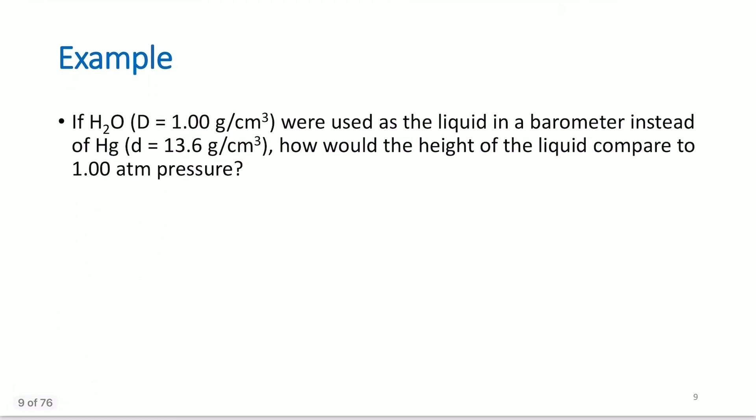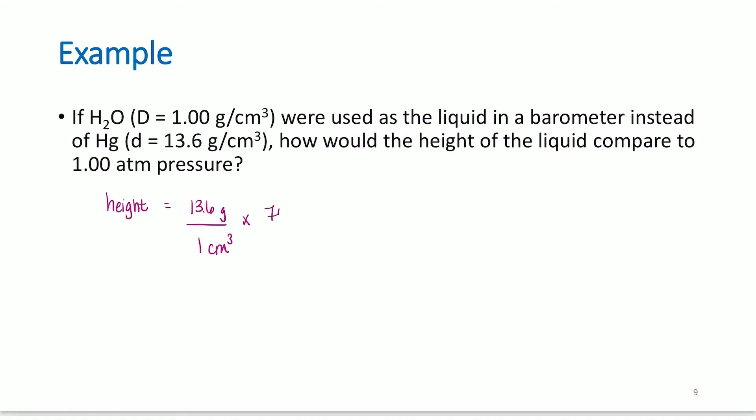Let's do a couple calculations so you can see how this is applied. If water, which has a density of 1 gram per centimeter cubed, were used as a liquid in a barometer, instead of mercury, which has a density of 13.6 grams per centimeter cubed, how would the height of the liquid compare to 1 atmosphere of pressure? Basically, the height... We use mercury because it's really, really dense. The height, equal to 13.6 grams per 1 centimeter cubed, times this by 760 millimeters. Why am I doing it like this? It's because if water was 1 gram per centimeter cubed, mercury is 13.6 times denser than water, which means it would take 13.6 times the height of the mercury to reach what the water would do.